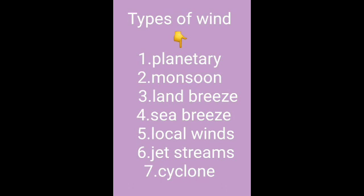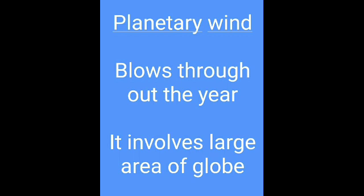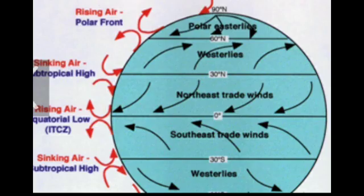The first type is planetary wind. Planetary wind blows throughout the year from one latitude to another in response to differences in pressure. It blows in the same direction only, involving a large area of the globe.